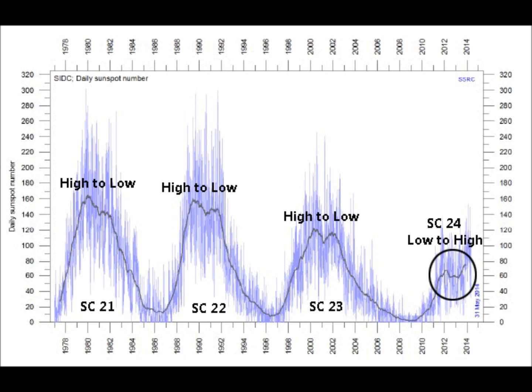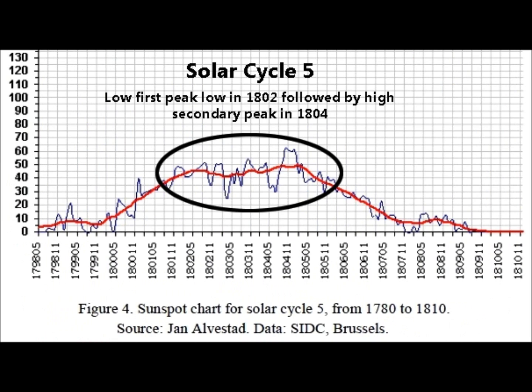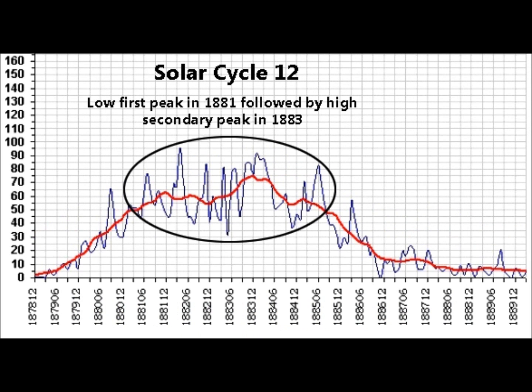This is the opposite of the norm. The last time we saw this was solar cycle 5, from 1802 to 1804, where there was a drop off after — as well as solar cycle 12 in 1881, followed by 1883, and then a drop off. It seems to be a two-year window.